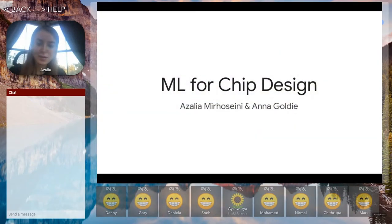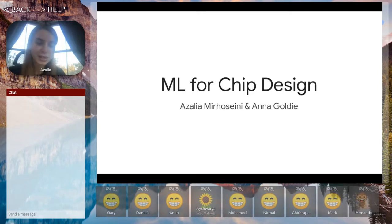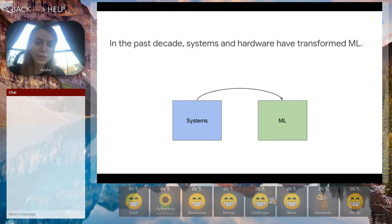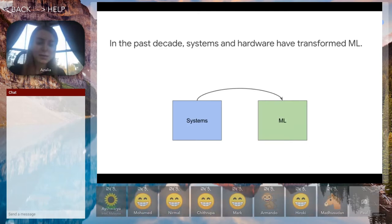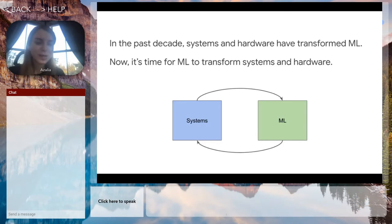In this talk, we are going to discuss some of the projects that we have been doing at Google Brain's Machine Learning for Systems and Chip Design team. Our motivation for founding this team three and a half years ago was that in the past decade, systems and hardware have really transformed machine learning, and we want to use machine learning now to return the favor and transform the way systems and hardware are designed.